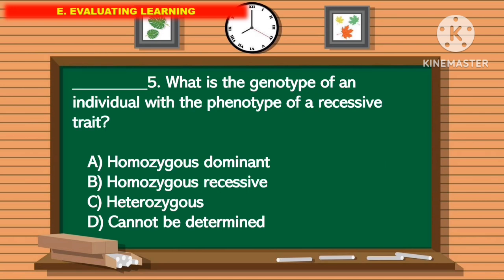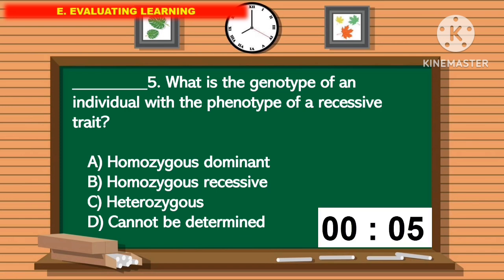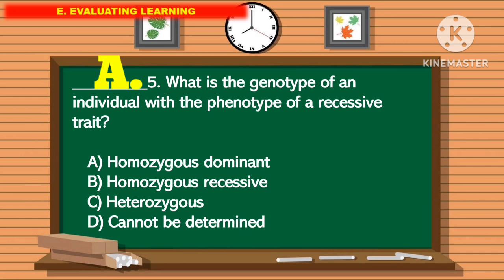For question number 5, what is the genotype of an individual with the phenotype of the recessive trait? The correct answer is letter A.